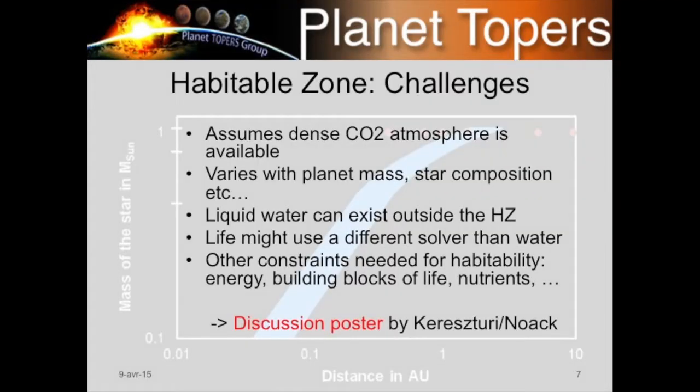There are some challenges for the habitable zone. One is that the atmosphere might not look like you need it to. The habitable zone is typically shown for one example state — an example age, planet mass, and star composition — and it may actually vary with these factors. There is also another habitable zone outside of it, where we have liquid water in the subsurface. Life might also use a different solvent than water, which matters when we look for Earth-like life.